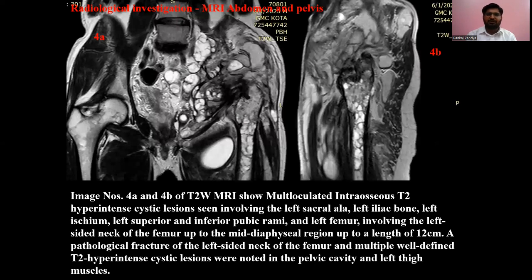On MRI of abdomen and pelvis, image number 4a and 4b shows T2-weighted MRI images with multifocal intraosseous T2 hyperintense cystic lesions involving the left sacral ala, left iliac bone, left ischium, left superior and inferior pubic rami, and left femur involving the left side neck of femur up to mid-diaphysis, measuring up to a length of 12 cm.